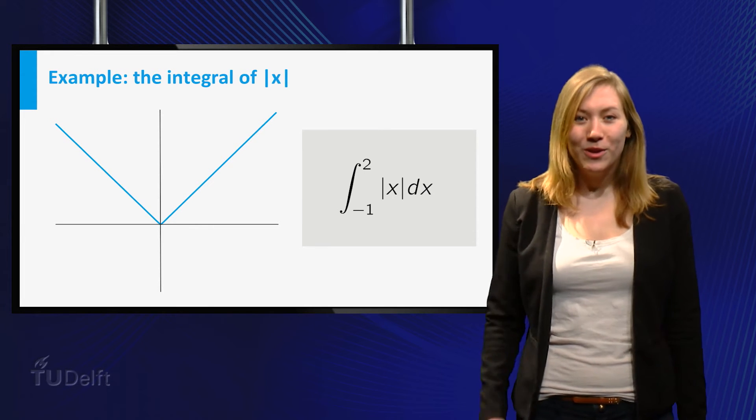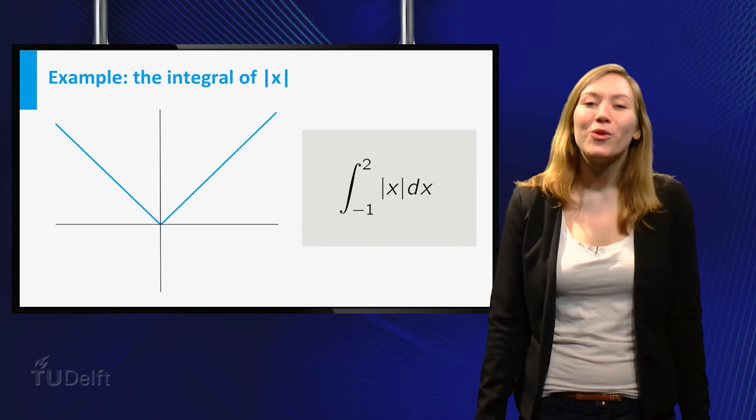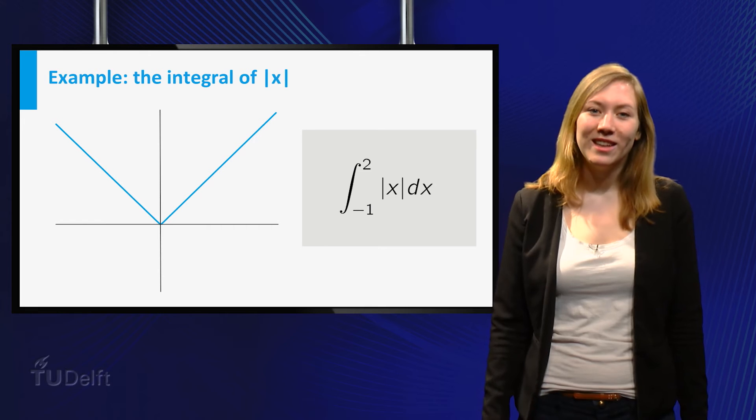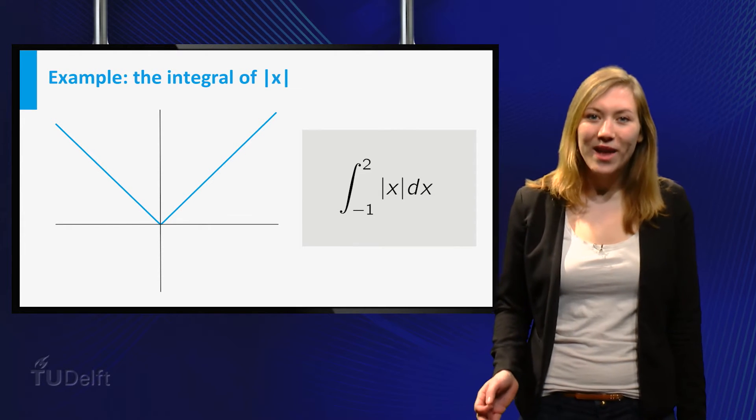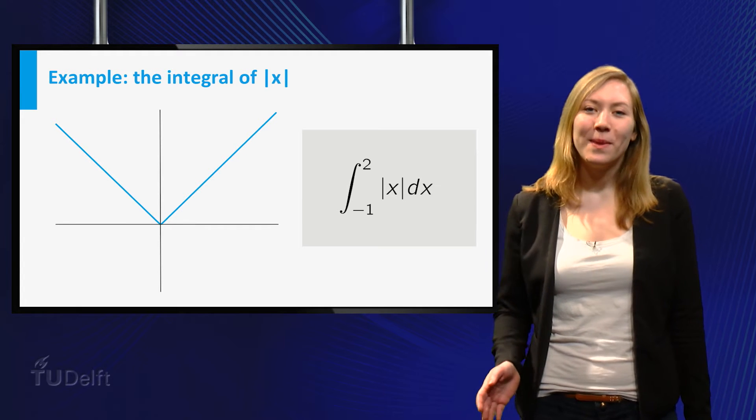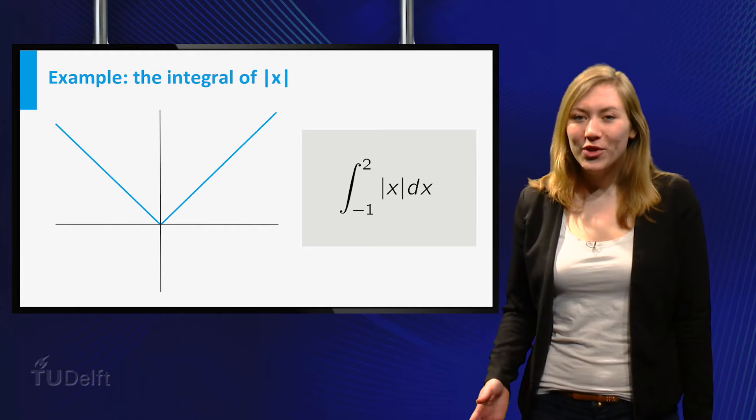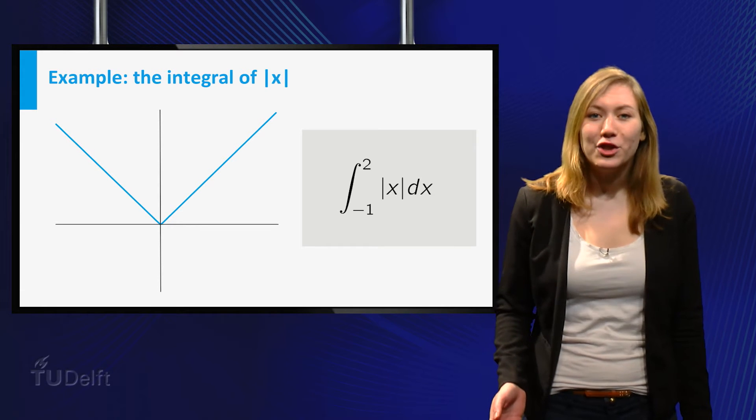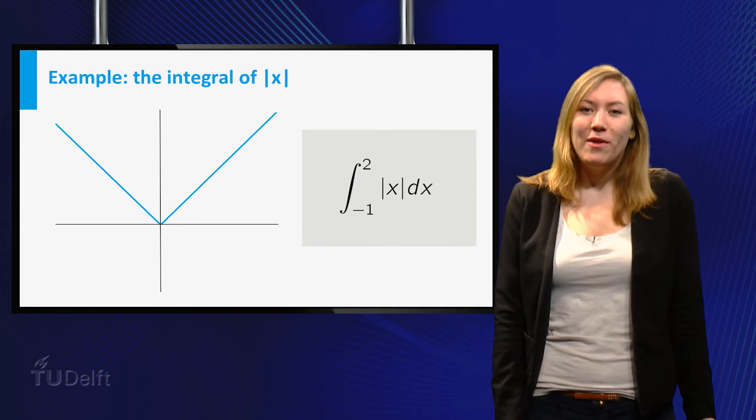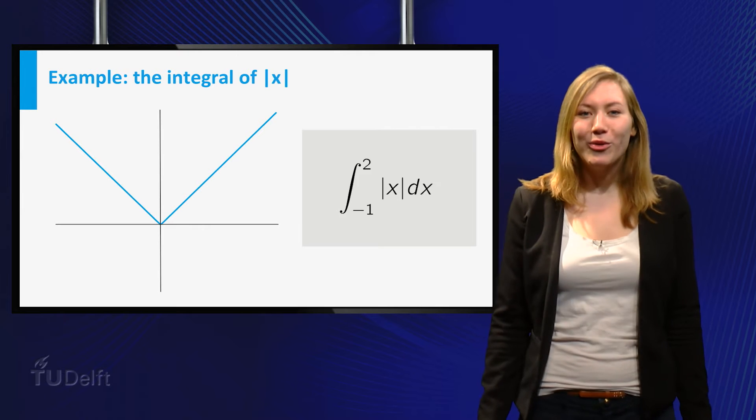Now I will give you an example of how to use one of these properties. This example shows you how to use these rules to calculate integrals of piecewise defined functions. We want to evaluate the integral from minus 1 to 2 of the absolute value of x. If you look at an integral you want to evaluate, the first thing that you will probably do is find a primitive function. But the absolute value of x does not behave the same on the whole interval.